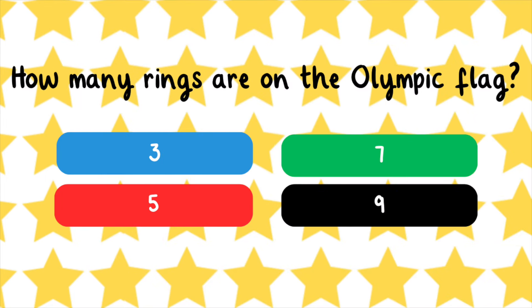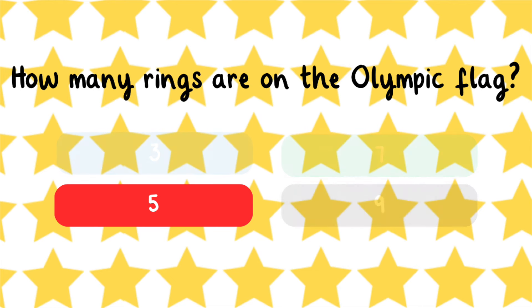How many rings are on the Olympic flag? 3, 5, 7, or 9? There are five rings on the Olympic flag.